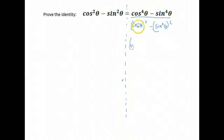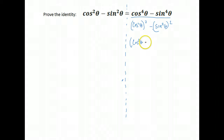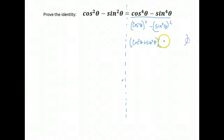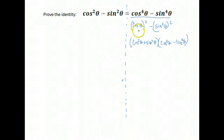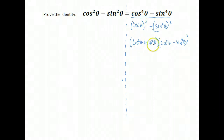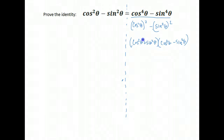You can factor it as the first term — cosine squared theta — plus the second term — sine squared theta — times another set of parentheses with those same two values but subtracted. That is the difference of squares rule for factoring. When you have two things squared and their difference, you can factor it as the first plus the second, and the first minus the second. Notice this has broken us down from fourths into squares.